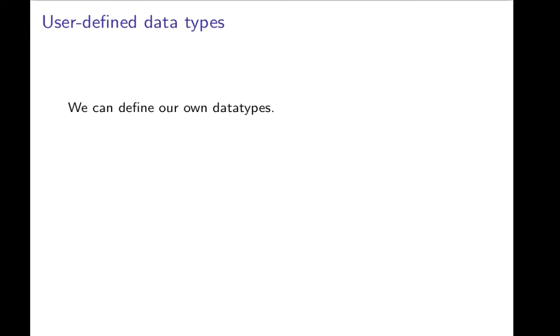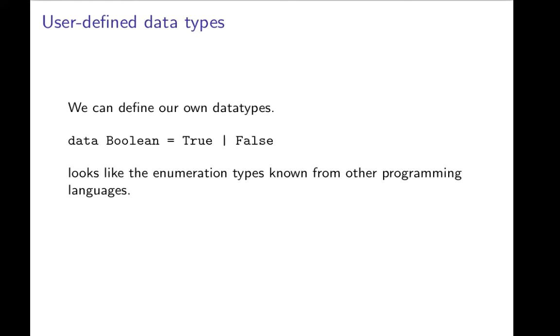What can we do if we can't use synonyms? Well, we can define our own data types, and that's one of the very nice features of Haskell. A simple example is something we probably know already, that we could define the type Boolean to be true and false.